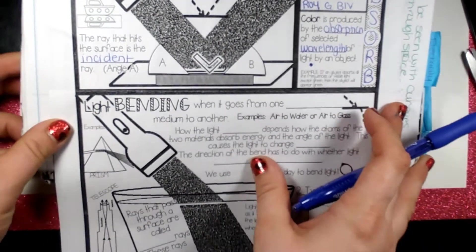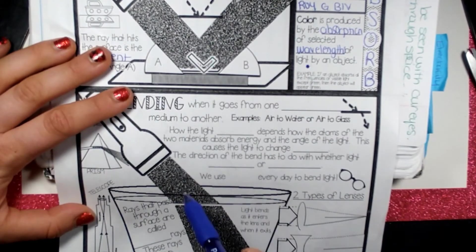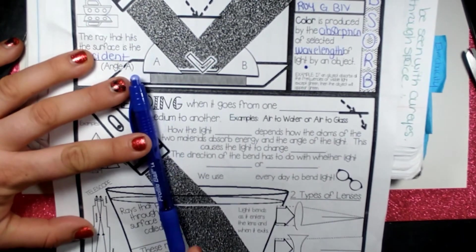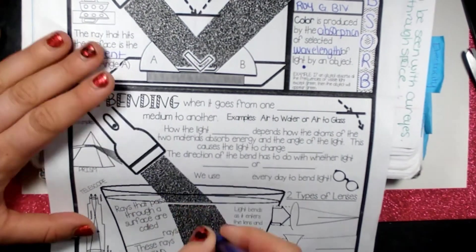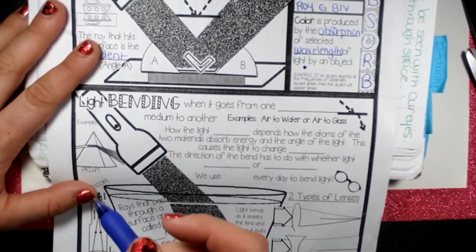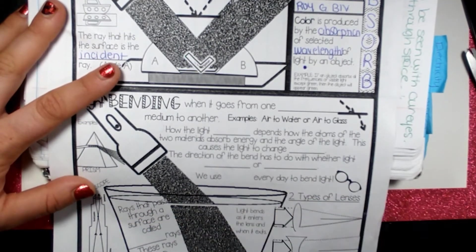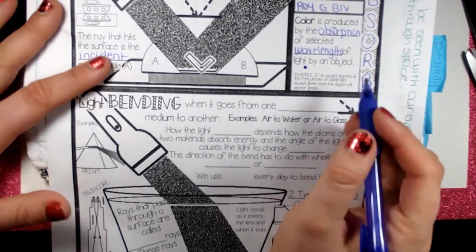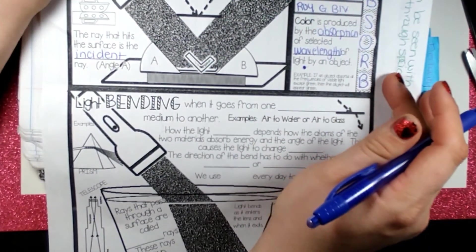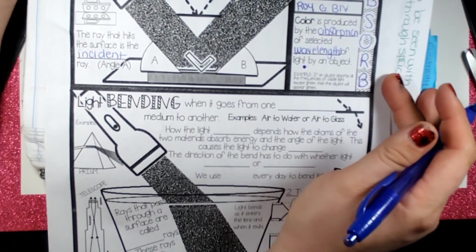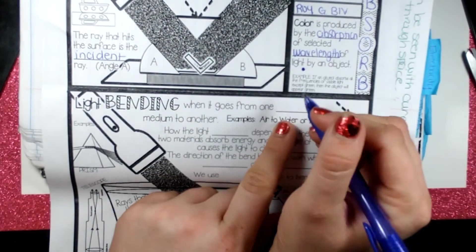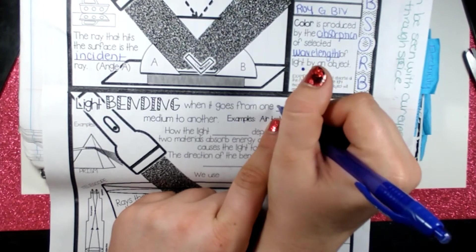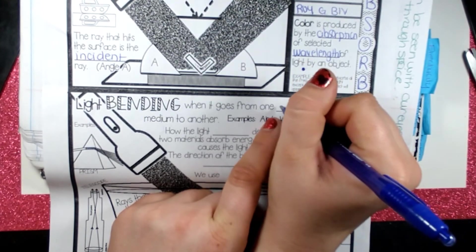Now the next one is, have you ever seen a pencil? If you put a pencil or a pen in a cup and then you look inside the side of the glass, it looks like it's bent. That's called refraction. Sometimes when you go from one medium or state of matter, or medium, or like gas or a liquid or solid, if you're going from one to the other, then sometimes it bends. And that's called refracting.